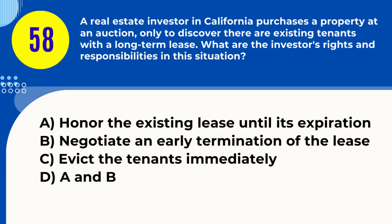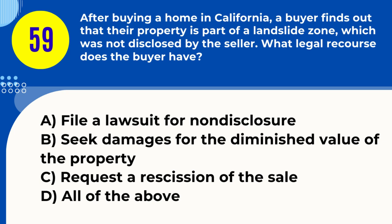Question 58. A real estate investor in California purchases a property at an auction, only to discover there are existing tenants with a long-term lease. What are the investor's rights and responsibilities? A. Honour the existing lease until its expiration B. Negotiate an early termination of the lease C. Evict the tenants immediately D. A and B. Answer: D. A and B. Explanation: Investors must honour existing leases but can negotiate early termination.